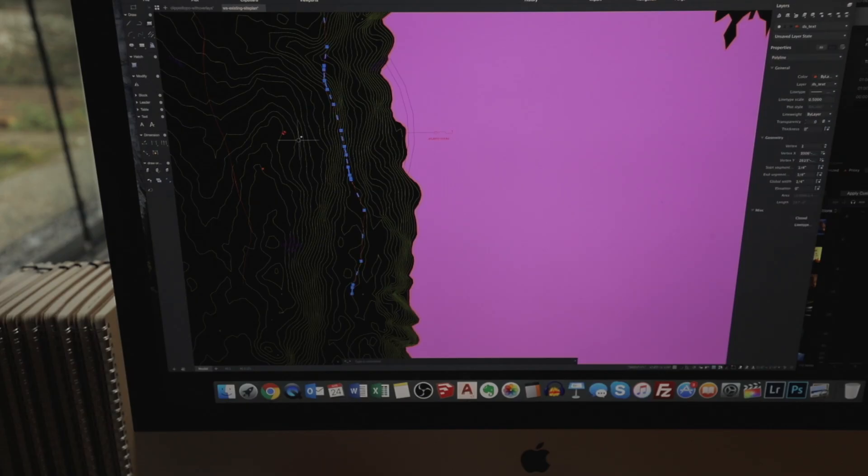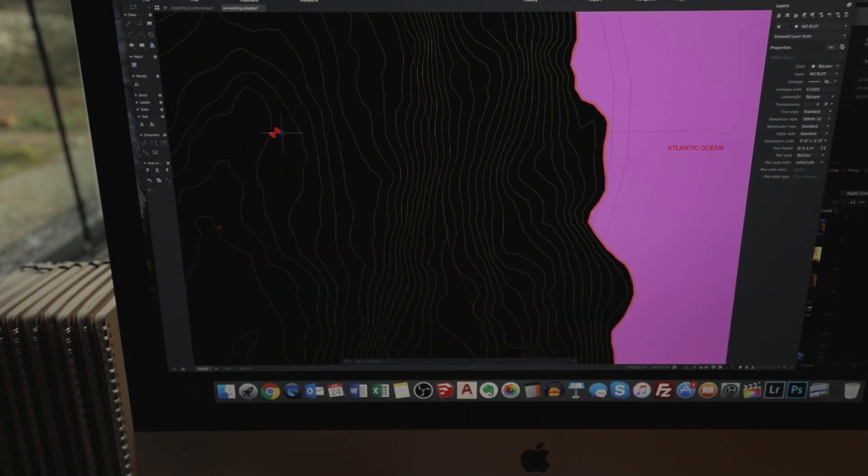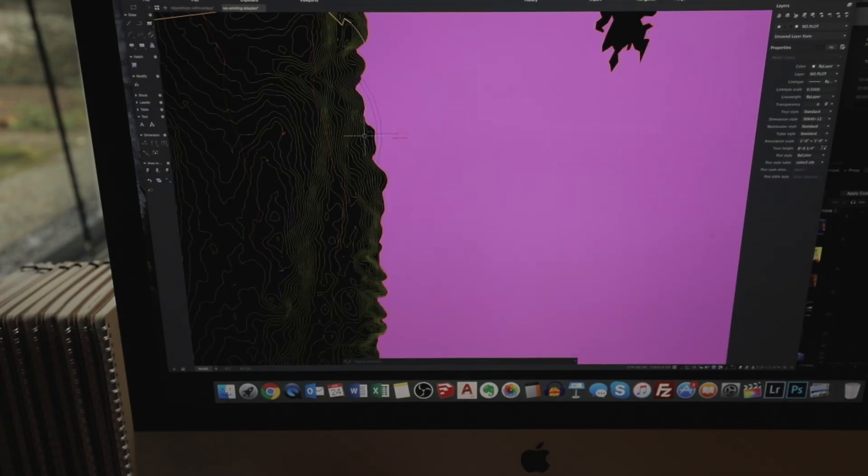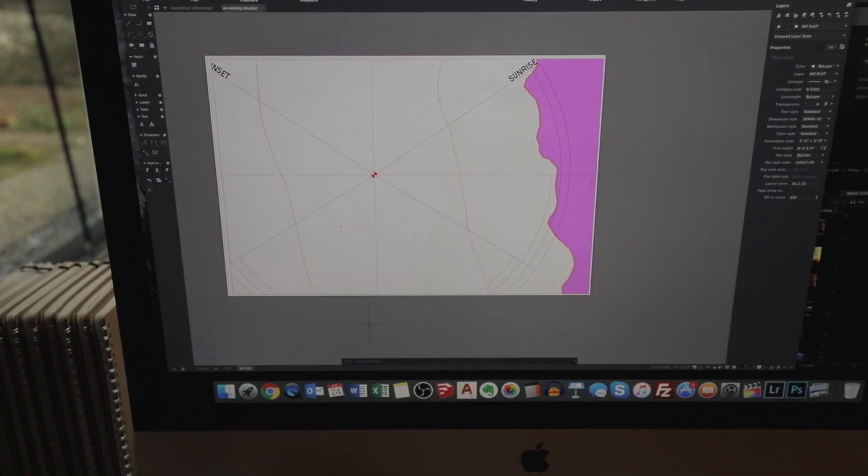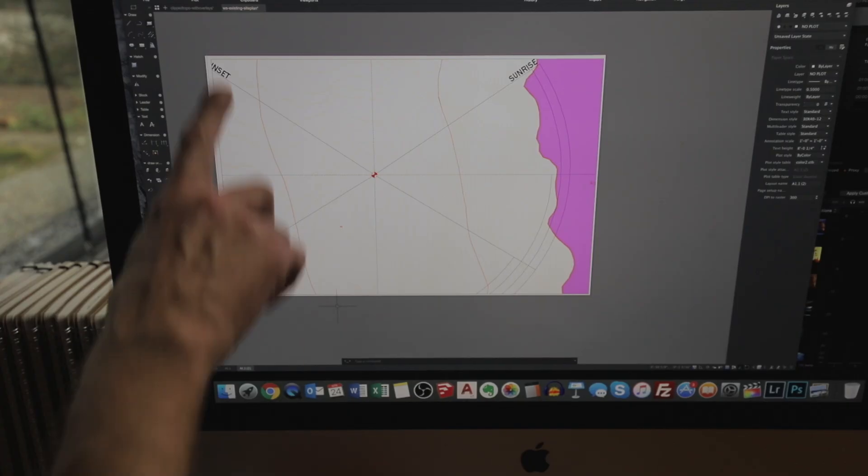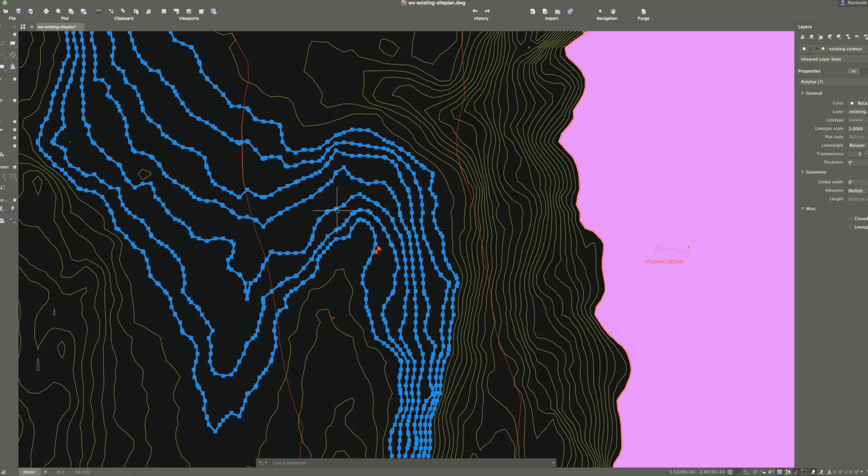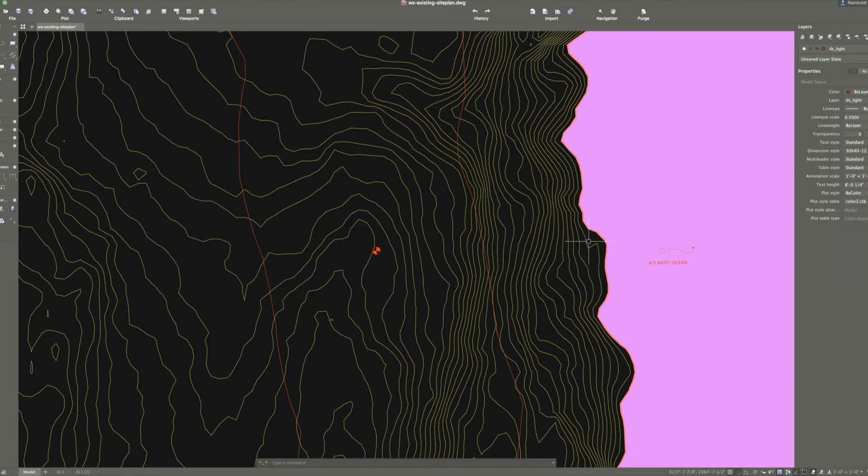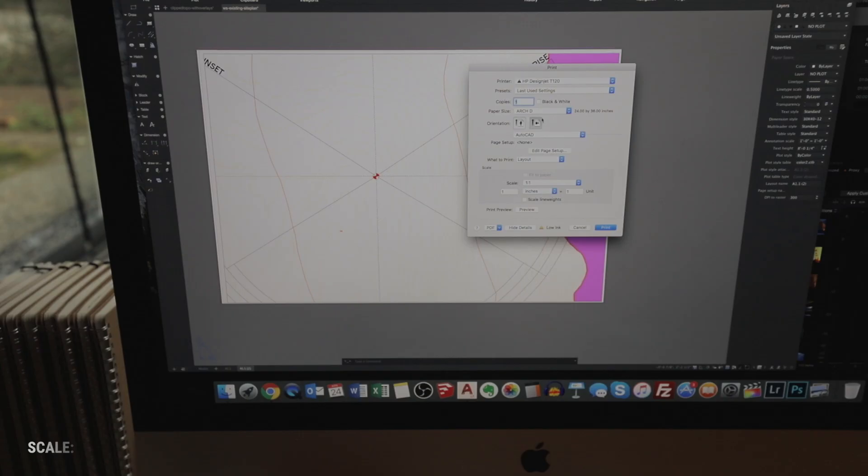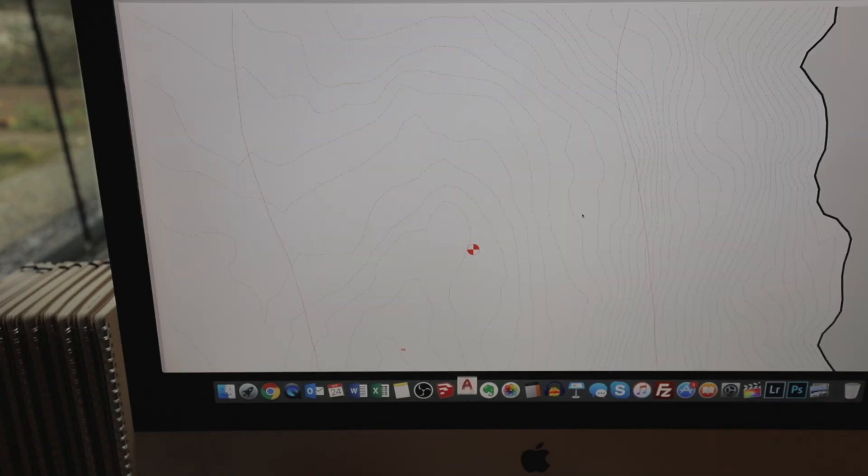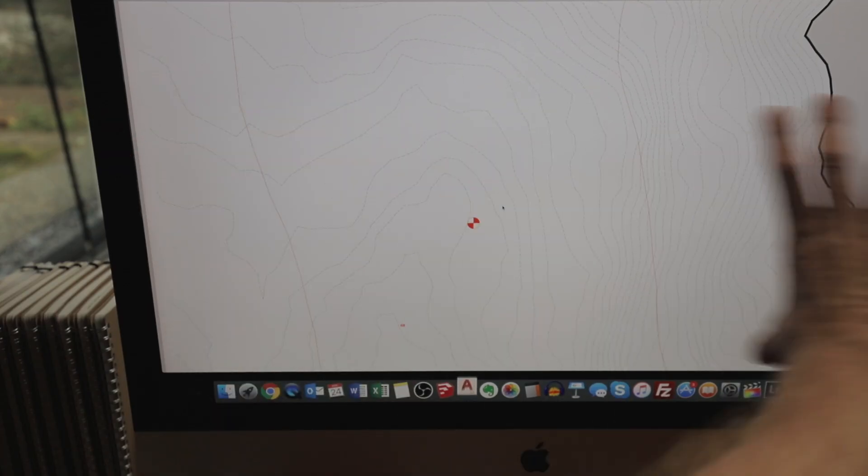The topography model shows the ocean, shows where our setback is, and this is our sort of general ideal building spot here. I'm just going to print this out at 24 by 36 inches. I don't want to capture some of the ocean in here. The contours are all shown here in yellow.